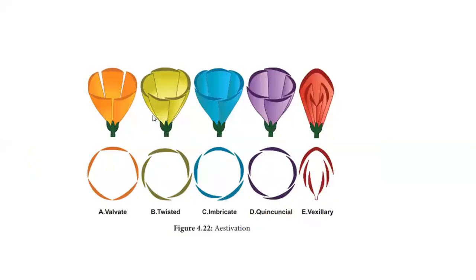This is aestivation. Aestivation means petal and sepal arrangement. In valvate aestivation, the edges of the petals just touch, but don't overlap. They are in close proximity. In twisted aestivation, petals twist in a direction and the edge of one petal overlaps the next.